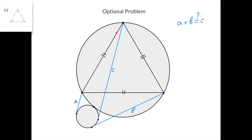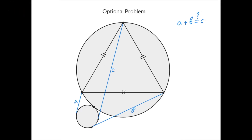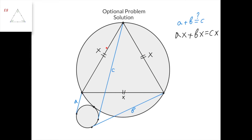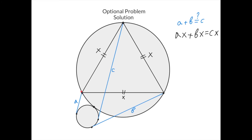Here's the optional problem. We have an equilateral triangle with its circumcircle, and a small circle externally tangent to the circumcircle. We draw the tangent lines from each vertex of the equilateral triangle to this small circle, marking segment A, segment B, and segment C from each vertex to each point of tangency. We need to prove that A plus B equals C. Let the side of the equilateral triangle equal x. Considering each vertex as a circle with radius zero, we apply Casey's theorem to get A times x plus B times x equals C times x. Canceling x from all terms gives A plus B equals C, as desired.